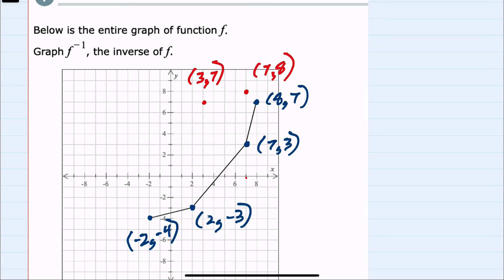The 2, negative 3 becomes negative 3, 2. And the negative 2, negative 4 becomes negative 4, negative 2. So we have taken each of these points, found its inverse.